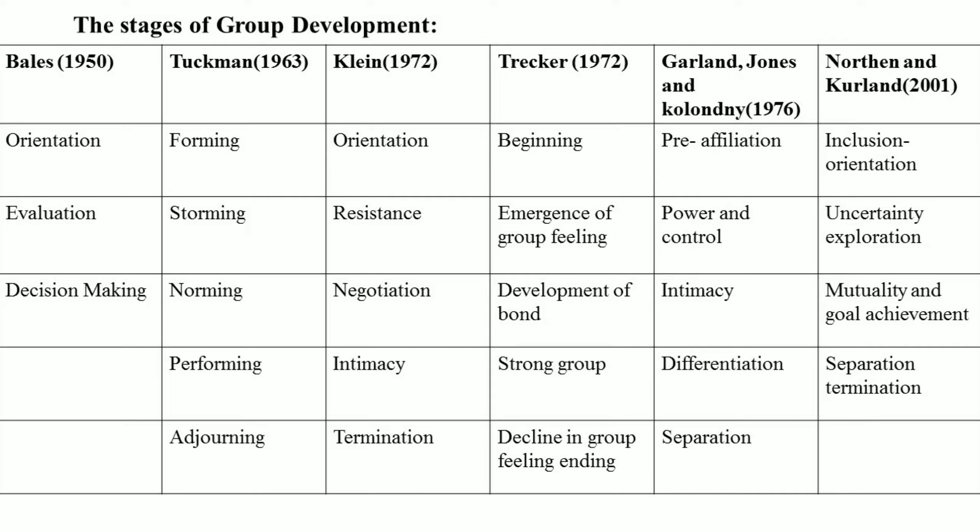Northern and Kurland in 2001 gave the stages of inclusion, orientation, uncertainty exploration, mutuality and goal achievement, and lastly separation and termination. Now we will discuss Tuckman's stages of group development in detail, as they are very important from the perspective of UGC NET examinations.